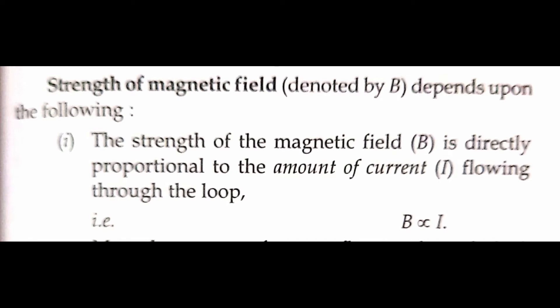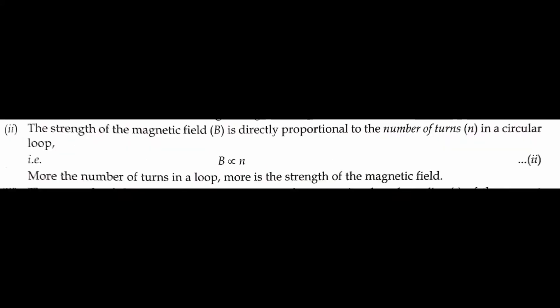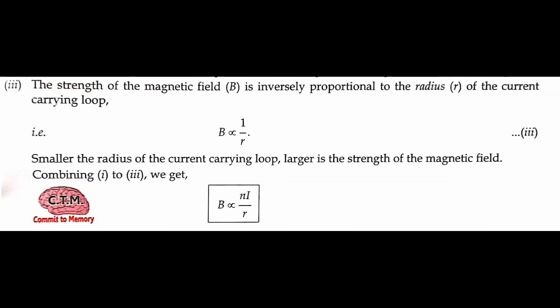First, the strength of magnetic field B is directly proportional to the amount of current I flowing through the loop — more current means stronger field. Second, B is directly proportional to the number of turns N in the circular loop — more turns means stronger field. Third, B is inversely proportional to the radius R of the loop — smaller radius means stronger field. Combining these, B is proportional to NI divided by R.